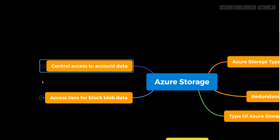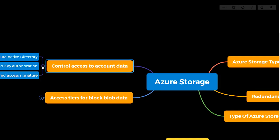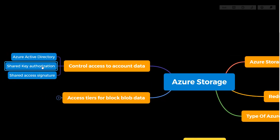Next is how we control access on the storage account. First, we can use Azure Active Directory to access data available on Azure Storage. The second option is Shared Key authorization — if you have the shared key from a particular storage account, you can use it to gain access to that storage account.